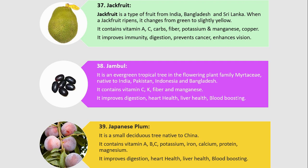Number 38. Jambu. It is an evergreen tropical tree in the flowering plant family Myrtaceae, native to India, Pakistan, Indonesia, and Bangladesh. It contains vitamin C, K, fiber and manganese. It improves digestion, heart health, liver health, and blood boosting.